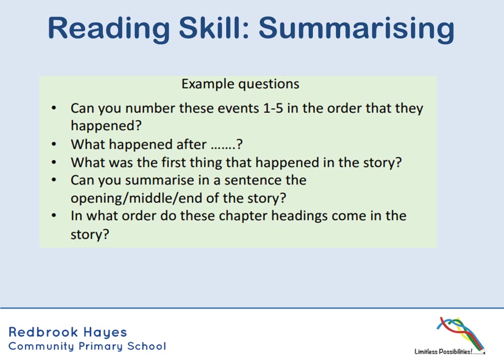One classic question is: can you number these events one to five in the order that they happen? That could be over the book, over a chapter, or just over a page. You could also be asked to summarize the basic idea of what happened in a chapter. A good example of a summary is the blurb of a book — when you read the back, it tells you a little bit about the book without giving away what actually happens.